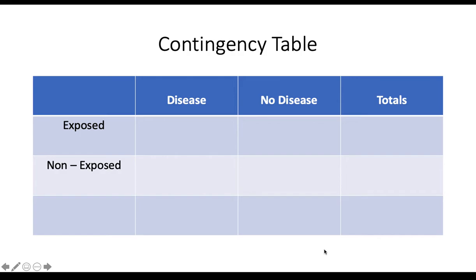The contingency table, also known as the 2x2 table, has different boxes representing important information. On the left-hand side we have exposure status — individuals who are exposed to a certain risk factor and non-exposed individuals. Then we have disease status: disease, no disease, and total columns for exposed and non-exposed, as well as totals for diseased and not diseased individuals.